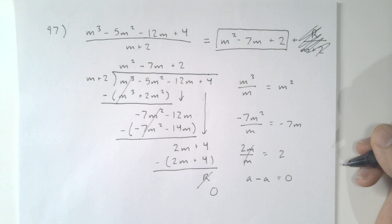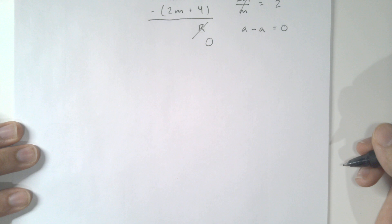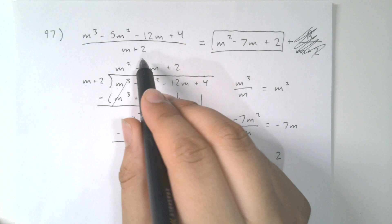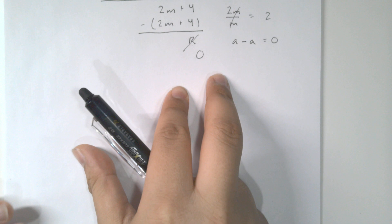For those of you going into pre-calc next year, we will use polynomial long division quite frequently when solving polynomials. However, we're still in Algebra 2 and we actually have a shortcut. It only works when we're dividing by some variable plus or minus a number, but when that's the case it's a lot simpler. Now let's look at how we do it with synthetic division.